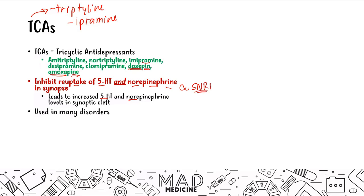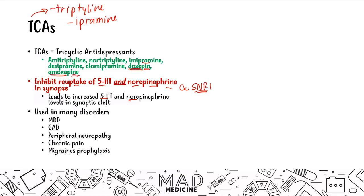TCAs are used in many disorders, including major depressive disorder, generalized anxiety disorder, peripheral neuropathy, chronic pain, and migraine prophylaxis. Two important specific uses to know: clomipramine is used for OCD, and imipramine is used for enuresis, also known as bedwetting. Commit these to memory, because exam questions may ask you to identify the correct drug for these conditions.